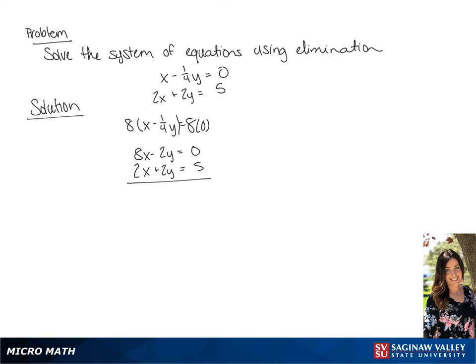Now we are able to combine these to solve the equation. We have 10x equals 5, giving us x equals 1 half.